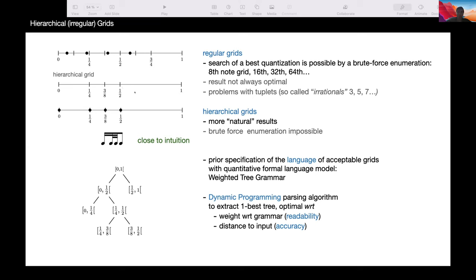But on the other hand, there are exponentially many hierarchical grids, of course, and it's not possible to brute force enumerate all of them to find the best notation. So we used more sophisticated techniques actually, based on a prior language specifying which grids are acceptable for notation. It's actually a tree language, formal tree language, defined by a weighted tree grammar. And we use dynamic programming algorithm in order to extract a best tree according to the weight value computed by the grammar, which represents the readability of the notation and the distance, the fitness between the input and the output.